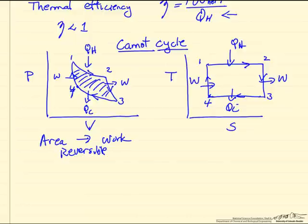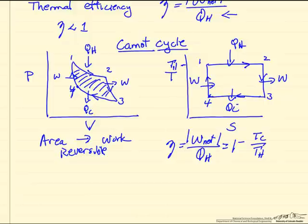So it turns out for this Carnot cycle, the efficiency, which remember is the network over QH, is just related to these two temperatures. So this is TH, the high temperature, and this is TC, the low temperature.